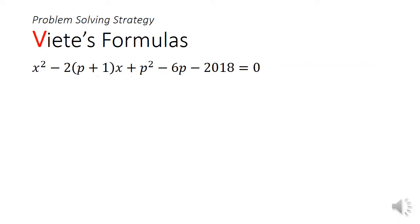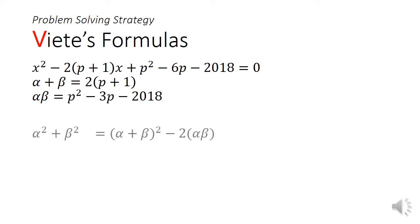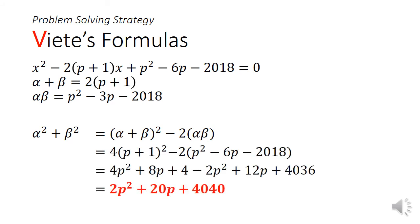So, recall Viete's formulas from the last episode. We can first find the sum and product of the roots. Next, using the sum of squares formula, we substitute the sum and product of the roots to find an expression for the sum of squares to be 2p square plus 20p plus 4040, highlighted in red.